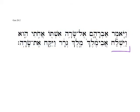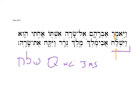Here again we have vaishlach, which is from shin-lamed-chet. In this case we have a qal vav-consecutive imperfect, 3ms. What we notice that's different is there's no holom as the theme vowel, as there would be in a strong verb, but rather it's converted to the patach because of the strong influence of the chet as the final root letter — vaishlach, 'and he reached out.'